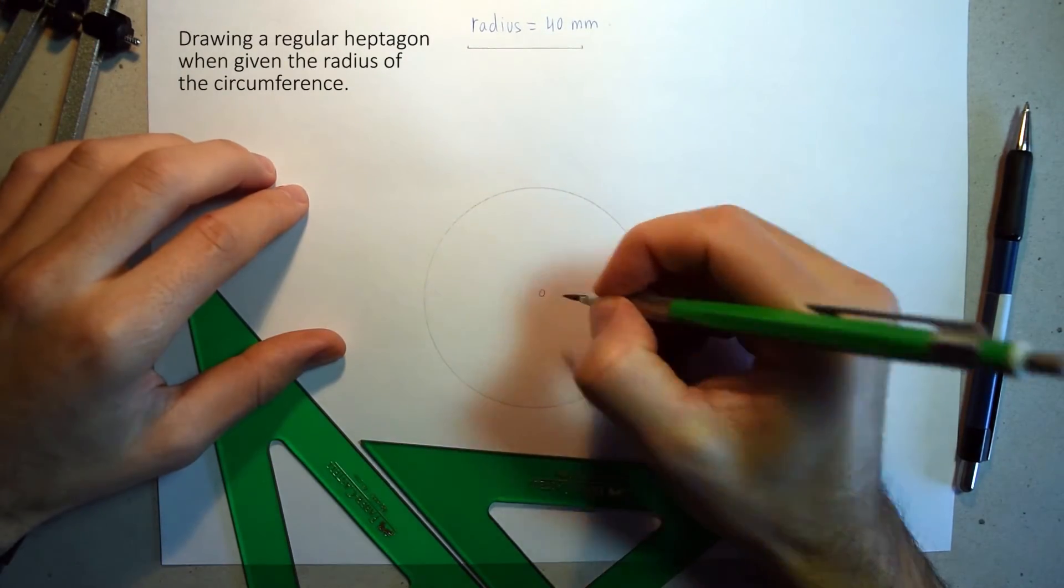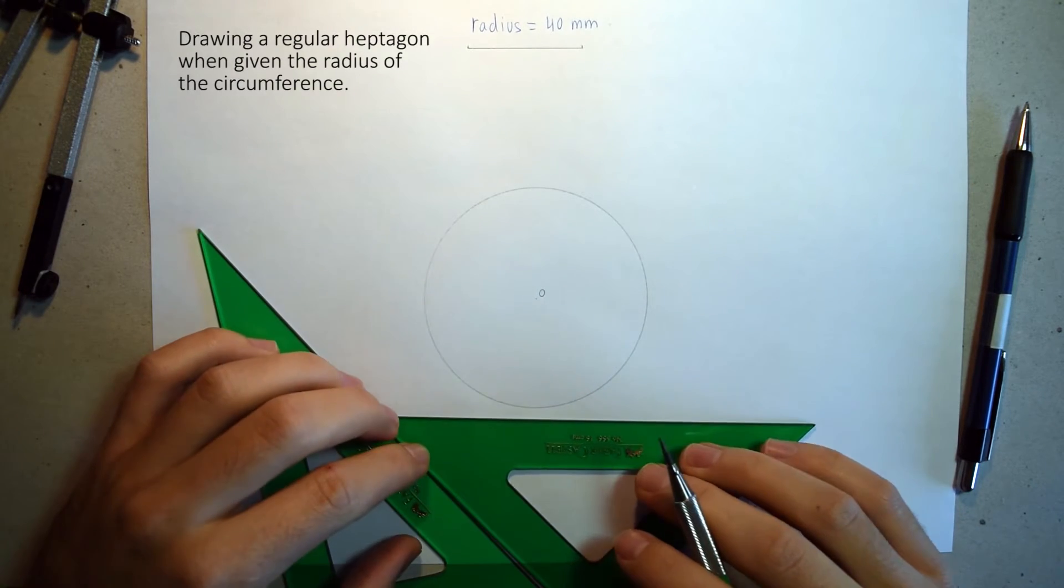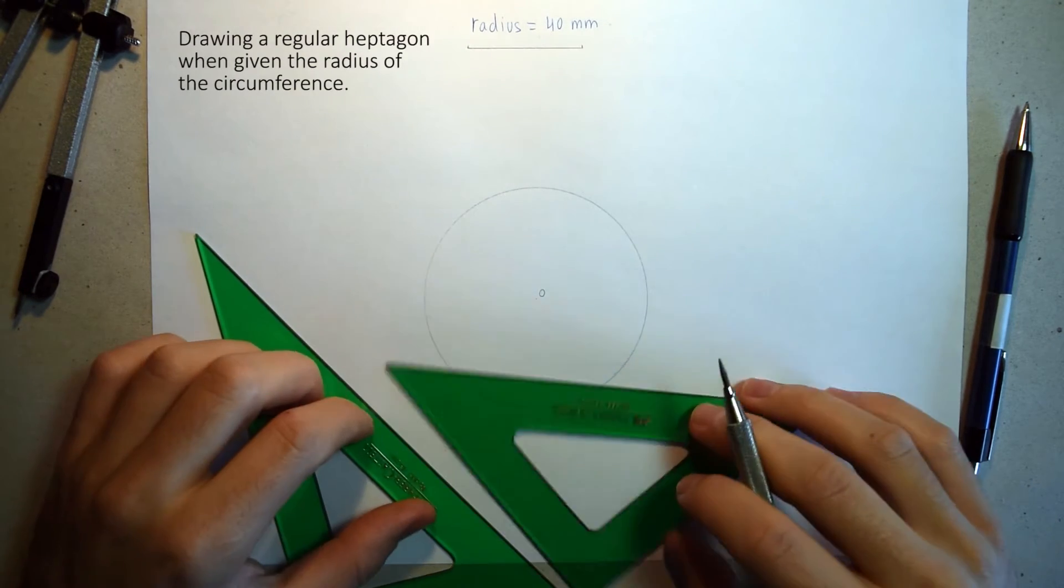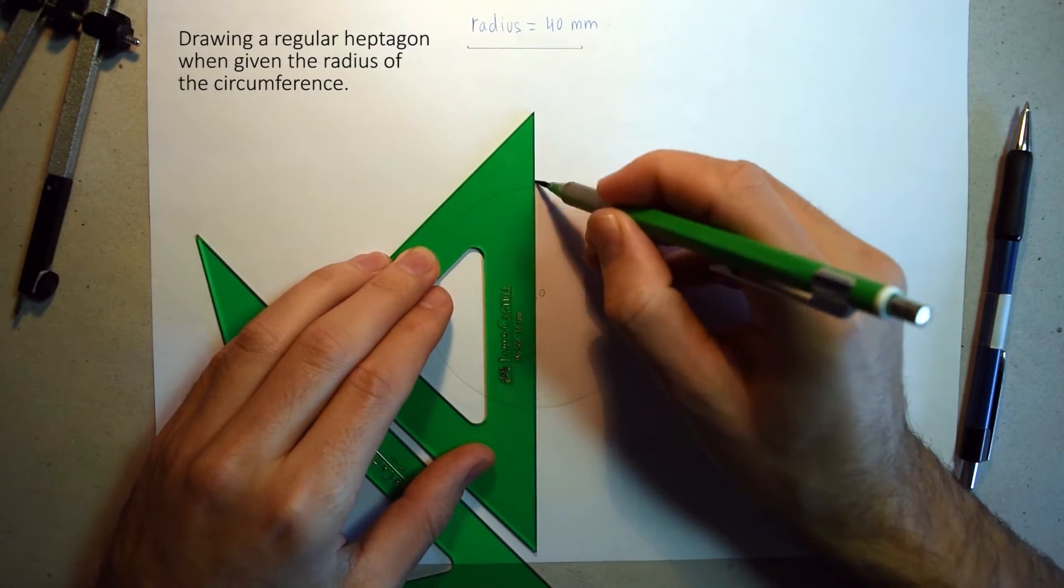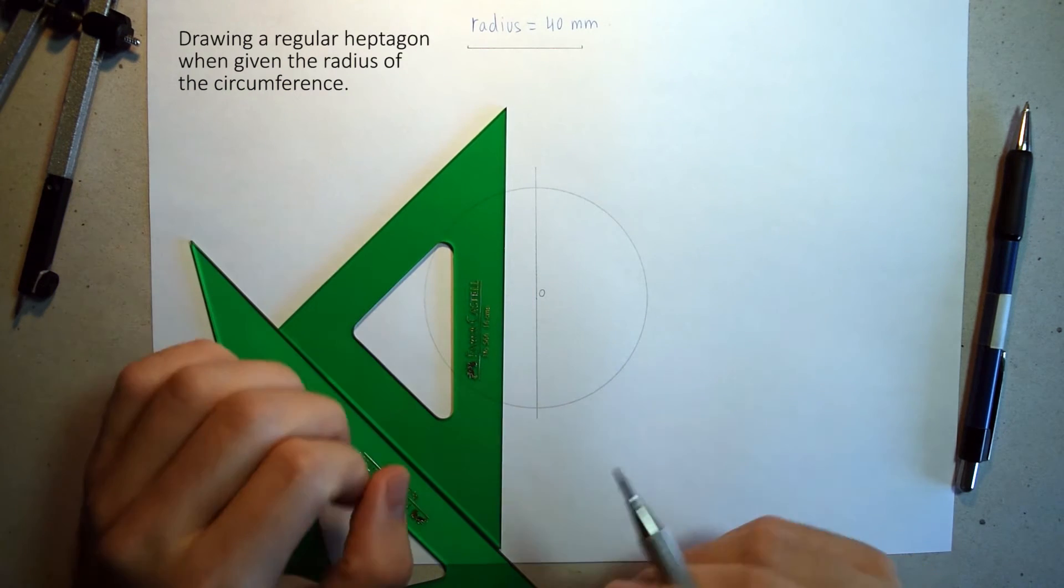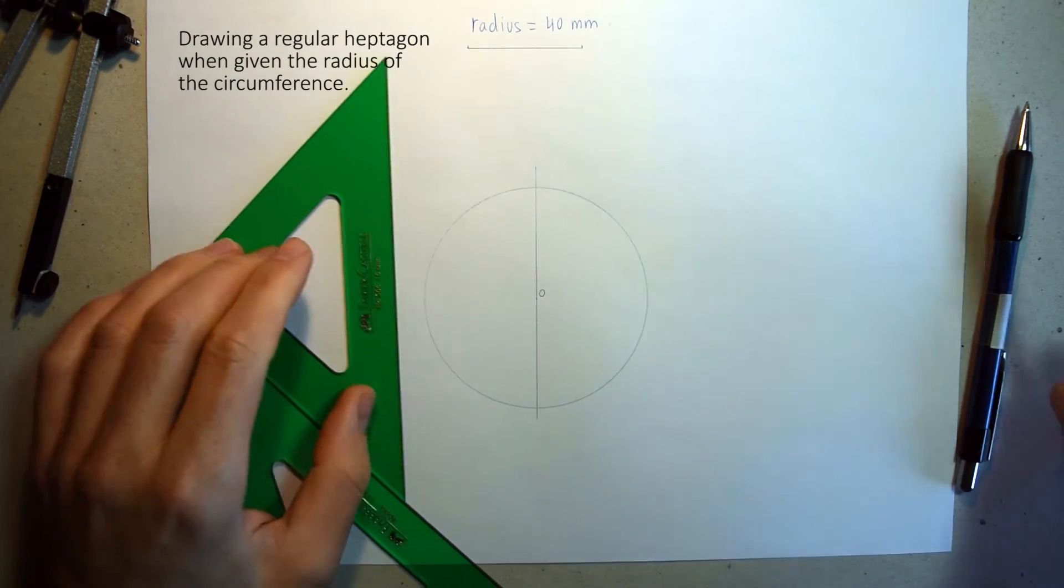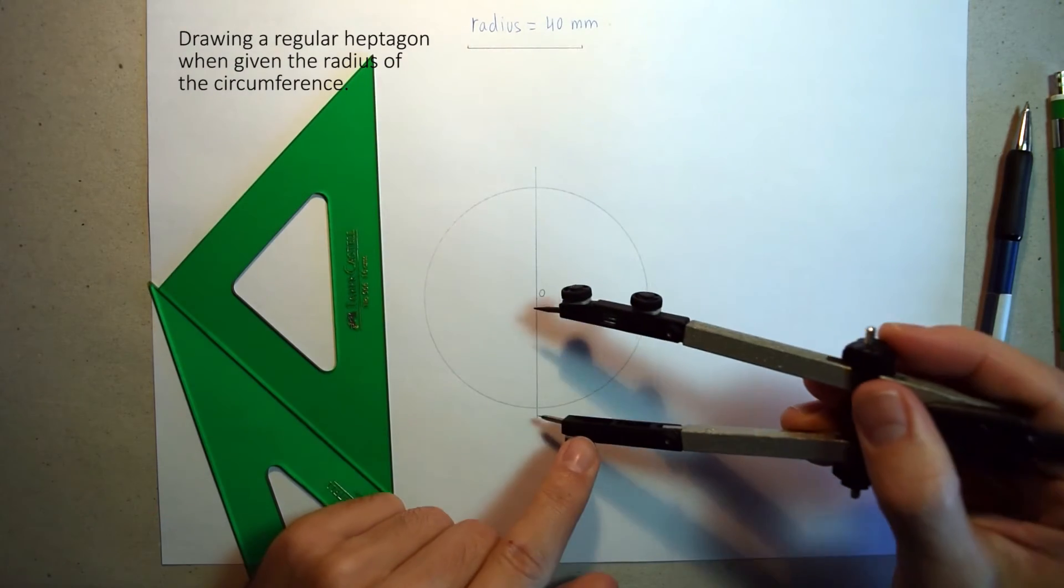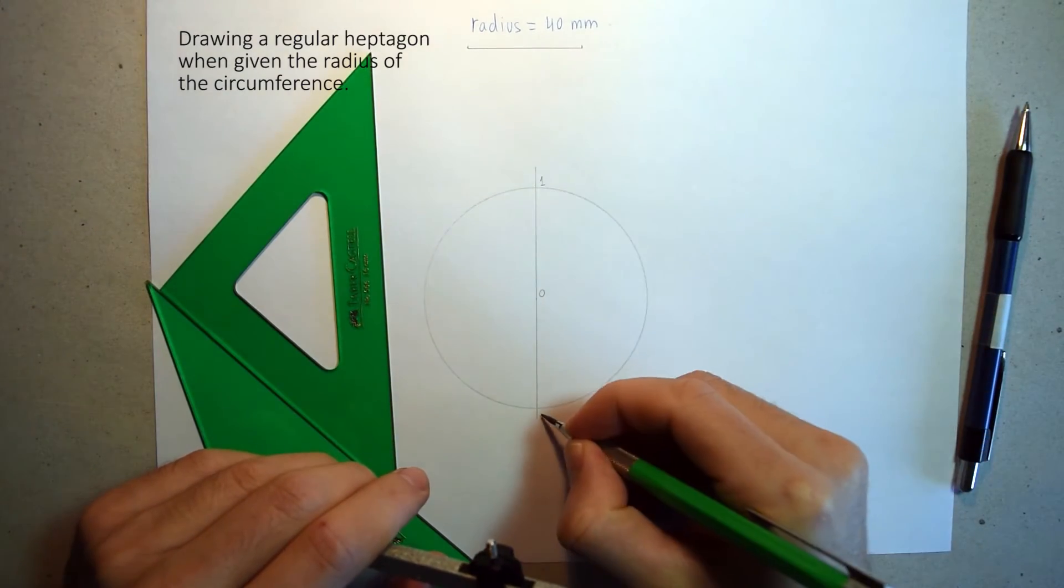Point O is the center of the circumference. Next step is to draw a vertical diameter like this one. Now we have to trace an arc. This arc has two points: point one and point two.